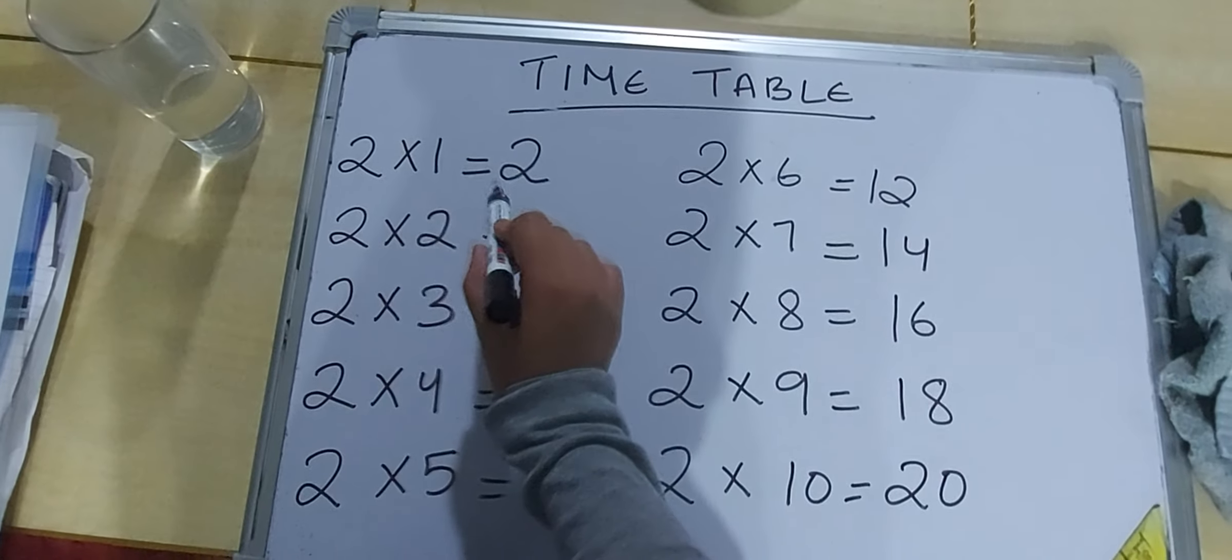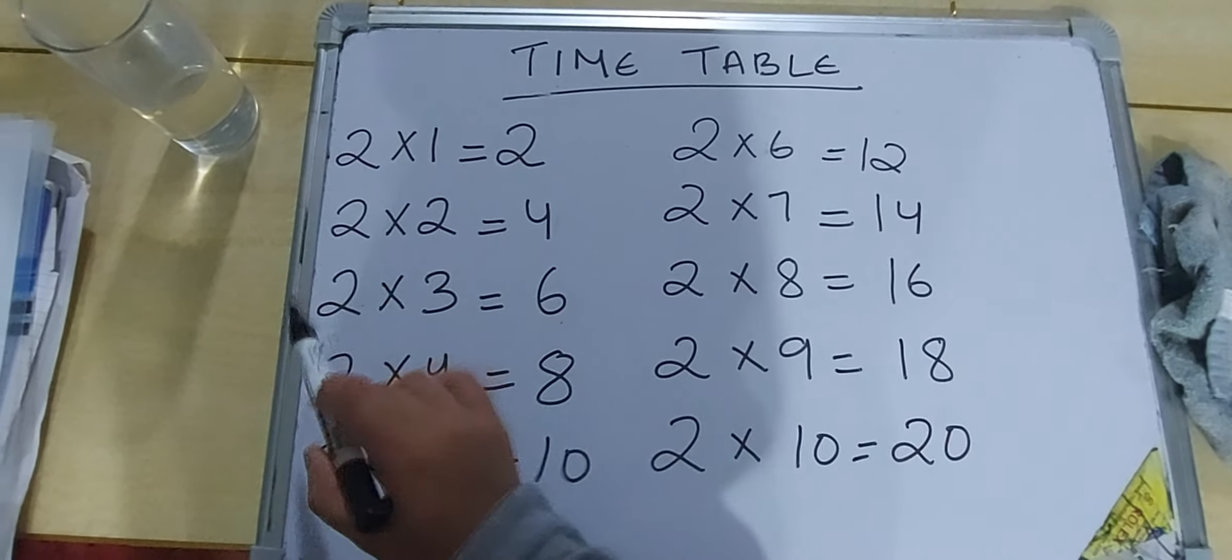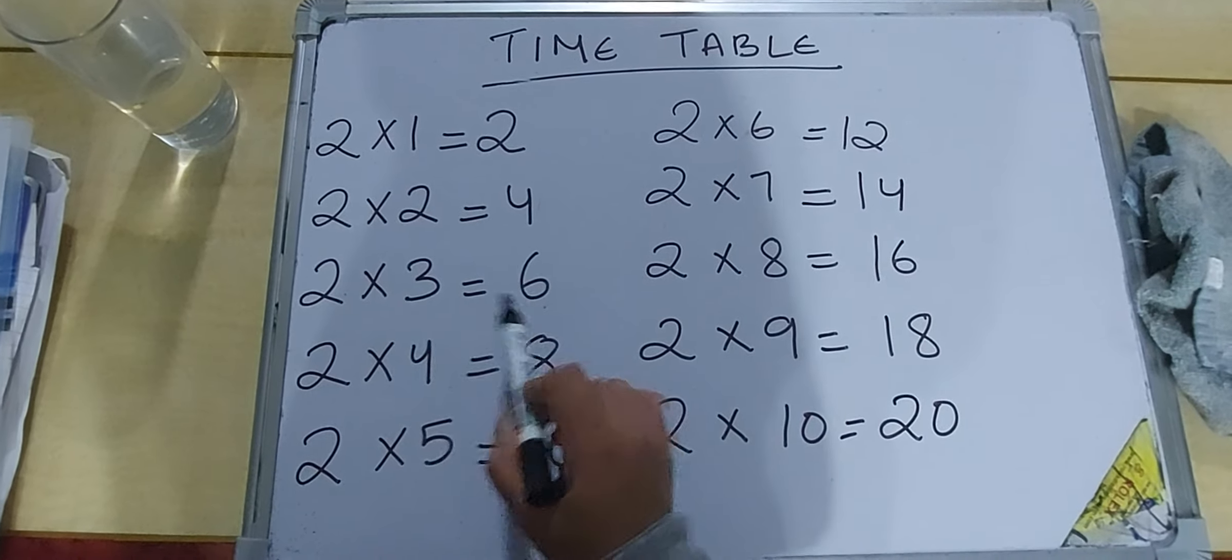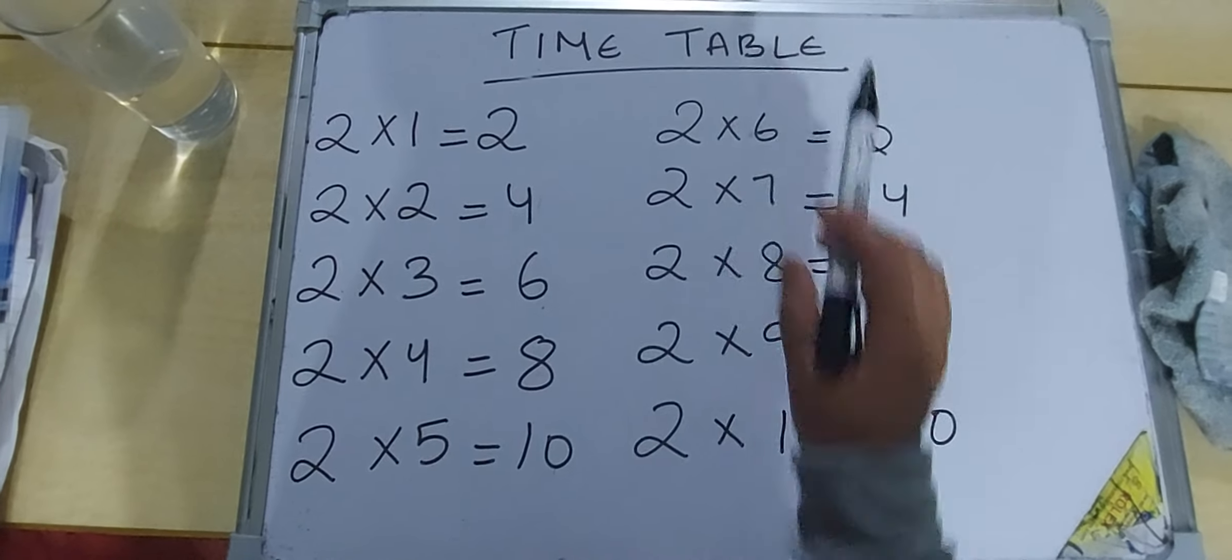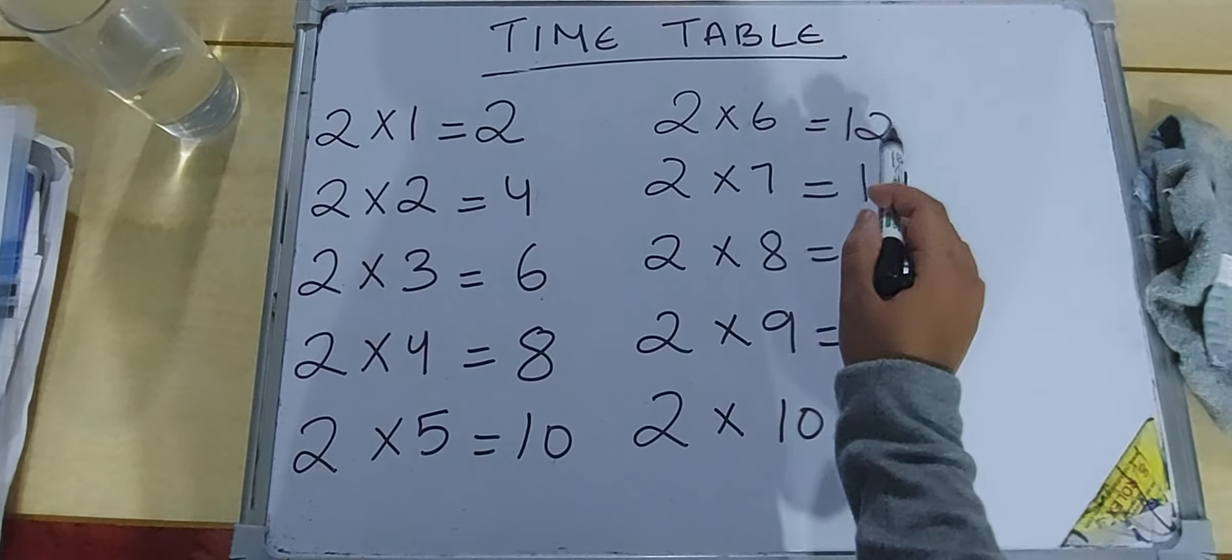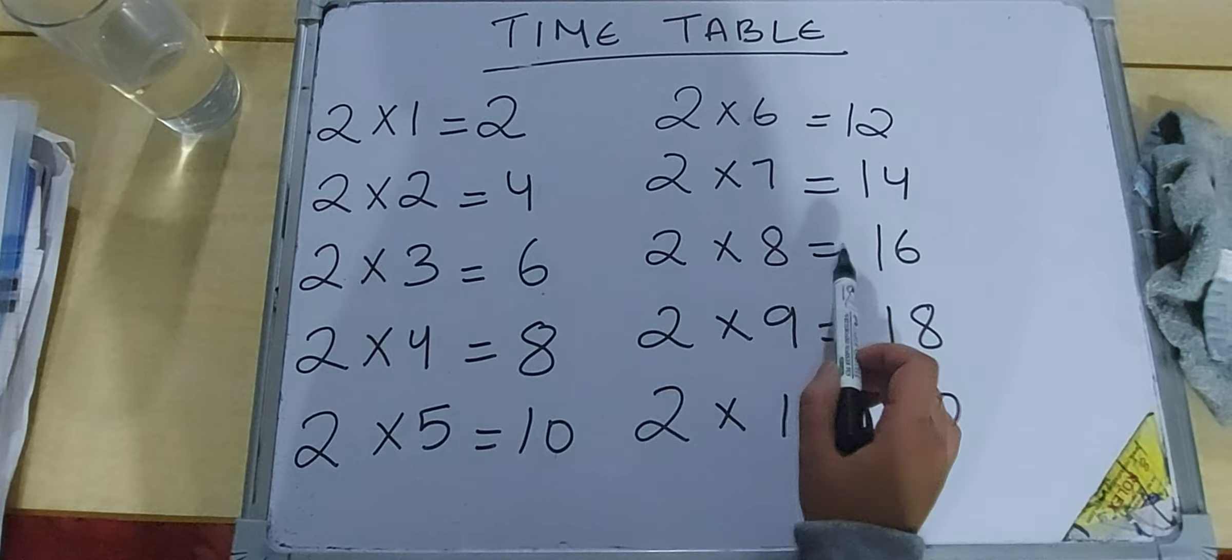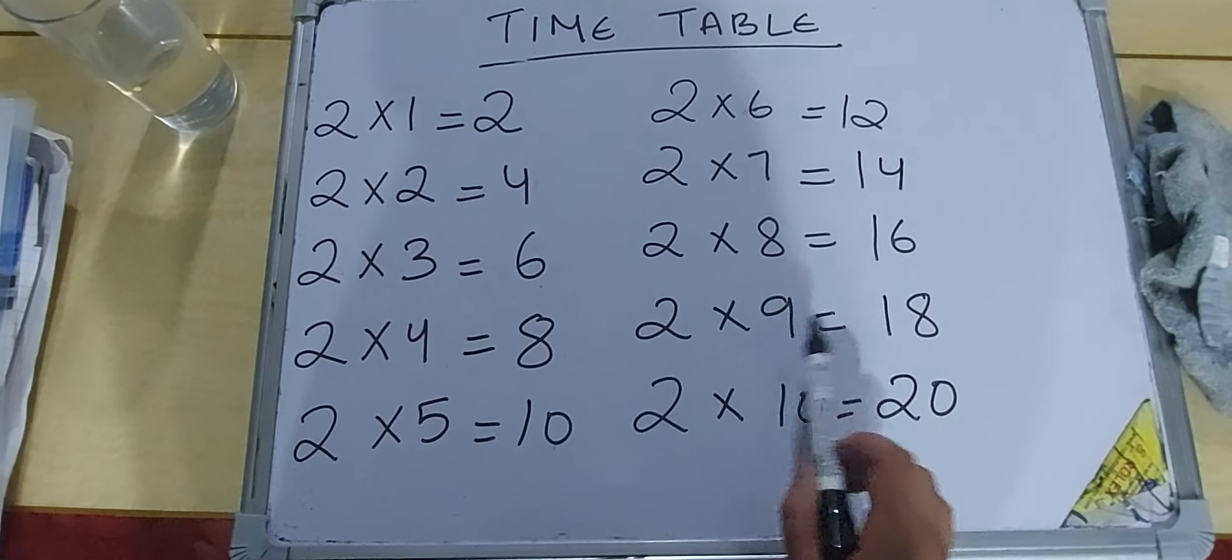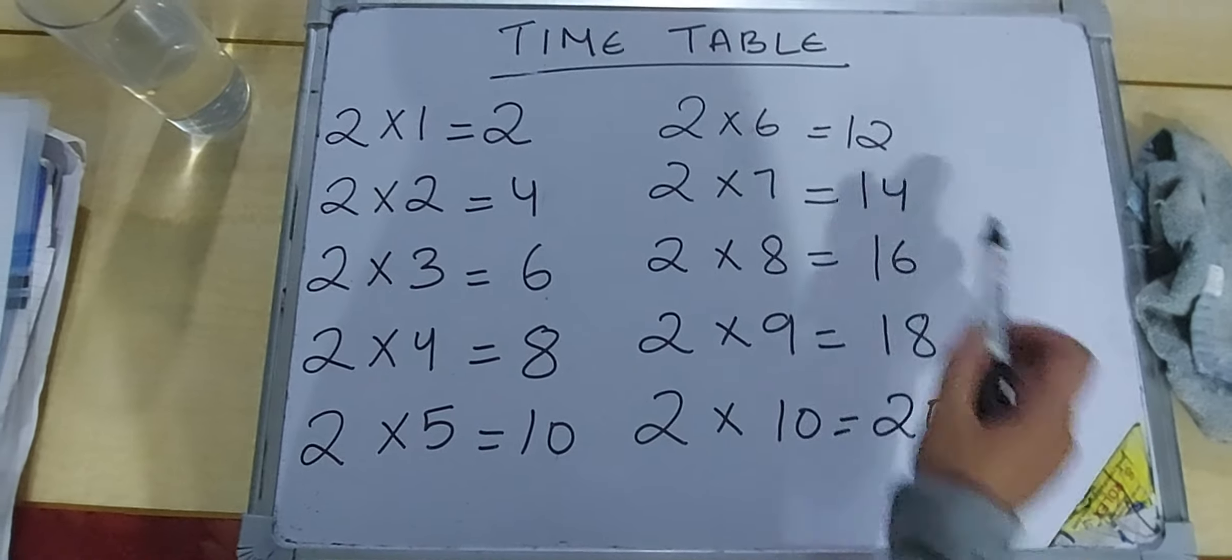Two one is two. Two twos are four. Two threes are six. Two fours are eight. Two fives are ten. Two sixes are twelve. Two sevens are fourteen. Two eights are sixteen. Two nines are eighteen. Two tens are twenty.